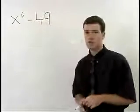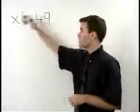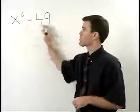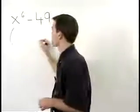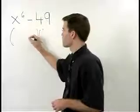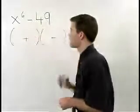Since 49 is also a perfect square, what we have here is the difference of two squares. That can be factored as the product of two binomials, one with a plus and one with a minus.